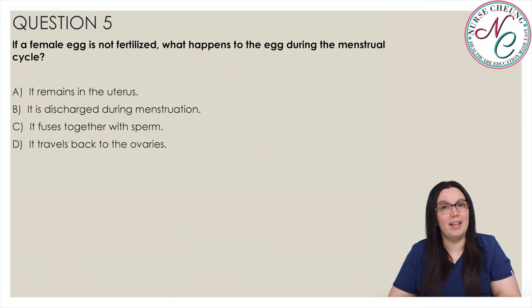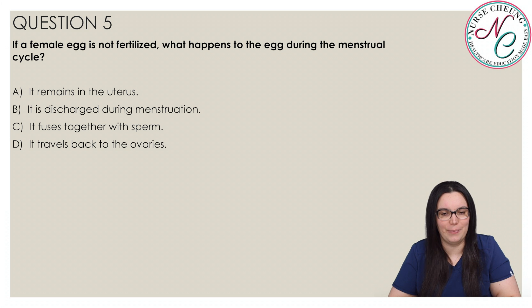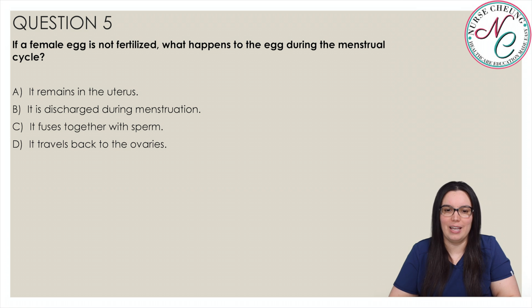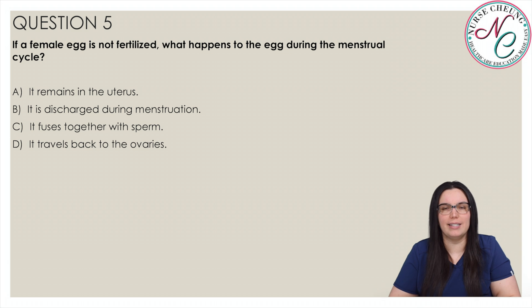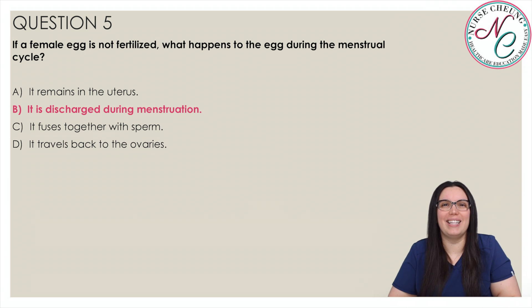If a female egg is not fertilized, what happens to the egg during the menstruation cycle? Is it A, it remains in the uterus; B, it is discharged during menstruation; C, it fuses together with sperm; or D, it travels back to the ovaries? And the correct answer is B, it is discharged during menstruation.